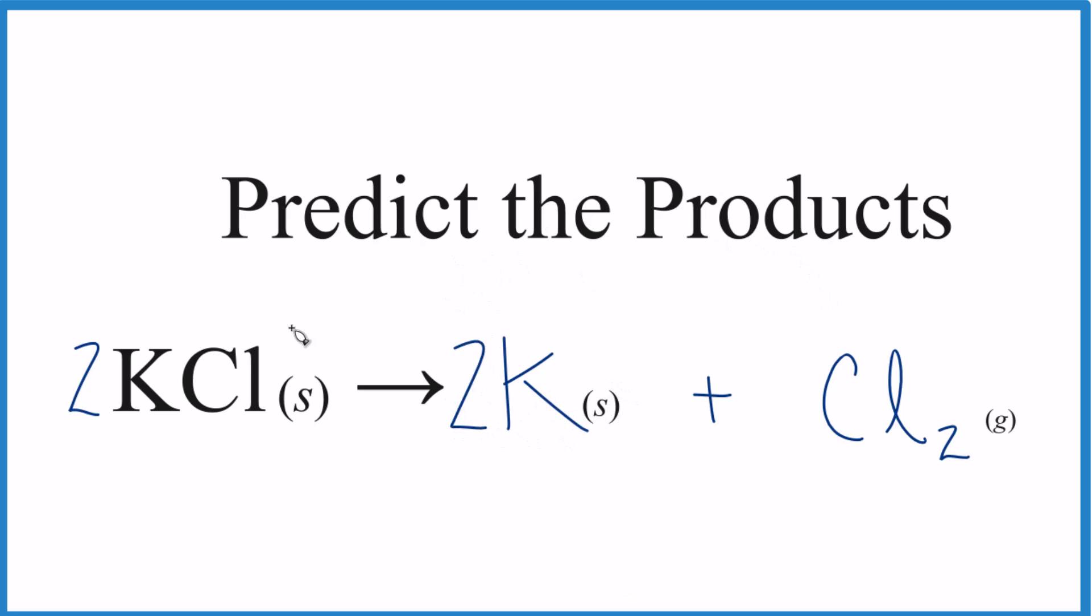So that's how you predict the products for this decomposition here of potassium chloride. Because it's the single thing we expect it would break apart, just be careful. You won't have Cl by itself. It's always going to be Cl2. Kind of like O2, H2, N2, those diatomic gases.